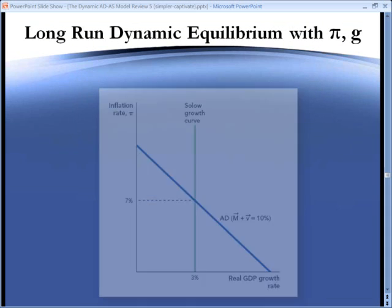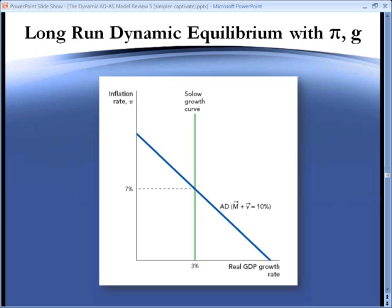Now, here is long-run dynamic equilibrium in inflation growth rate space. Imagine that nominal spending is growing at a rate of 10% per year, and that the Solow growth curve is at its normal level of 3% per year. As a result, the inflation rate is 7% per year. This is very clean and easy to understand.